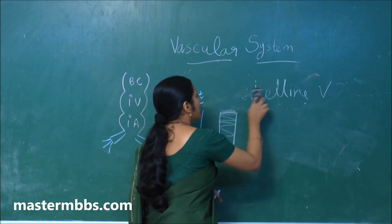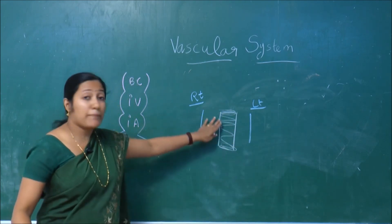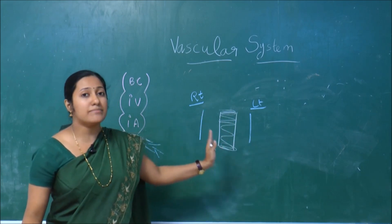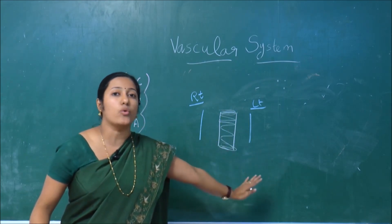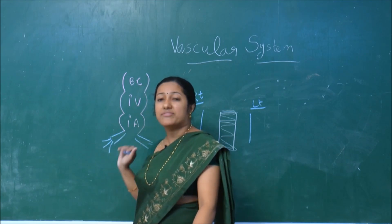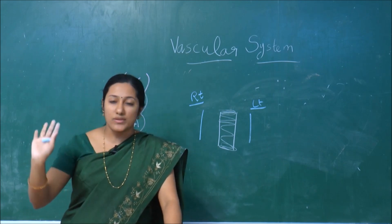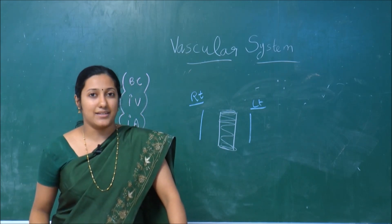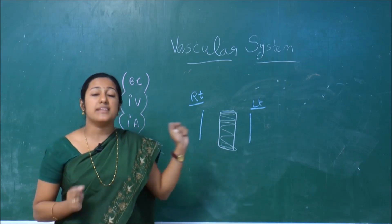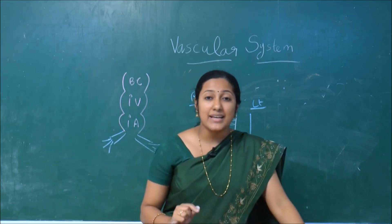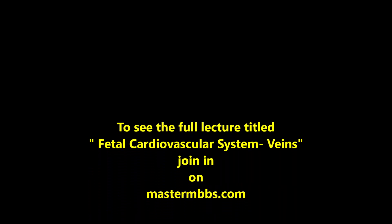The vitelline veins run on either side of the duodenum — right side and left side — and drain blood from the yolk sac to the two horns of the sinus venosus. The vitelline vein is basically related to the yolk sac, draining blood from it. It also helps in the formation of another important vein in the body, known as the portal vein.